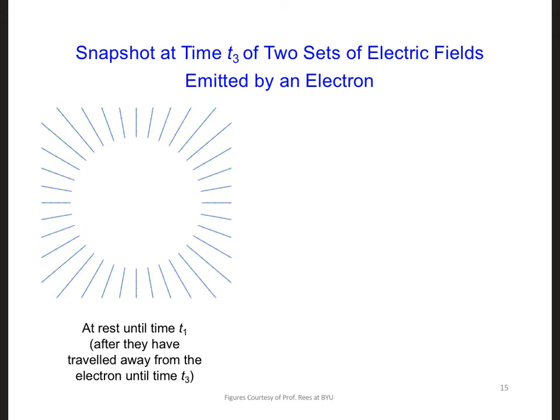First, the electron was at rest until time t1. And by the time that we take the image at time t3, these field lines will have moved away from the electron at a distance equal to speed of light c times t3, since we have meters per second and seconds. So this will give us the distance.